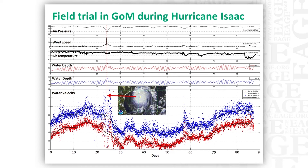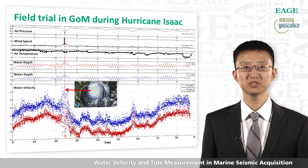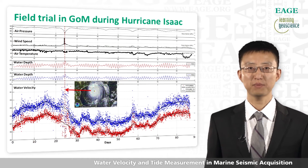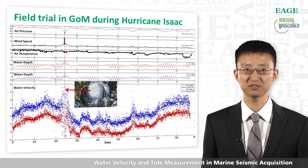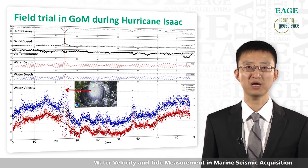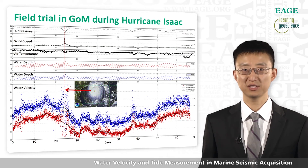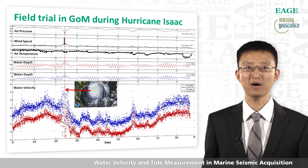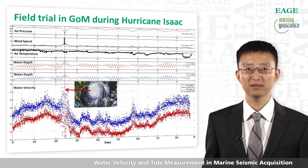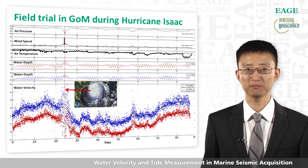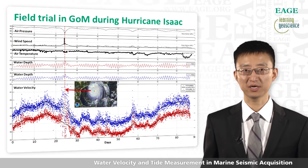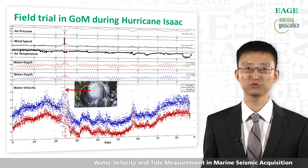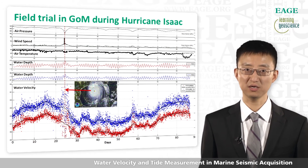Here is another field trial in the Gulf of Mexico with two PIES units used. The two plots in the middle show the PIES measured water depth, and the bottom plot shows the PIES measured water velocity variations. Hurricane Isaac happened to move through this area during the field trial, and the PIES clearly recorded the impact. The top three plots show the weather data from a nearby buoy station — during the hurricane, the wind speed surged, and the air pressure dropped by several percent. The low pressure at the center of the hurricane pulled the sea surface up, clearly visible in the PIES measured water depth. Since the sea surface was very rough during the hurricane, the travel time measurement was very noisy, and the resulting water velocity plot is quite noisy at that time.